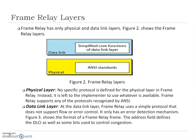In this slide, we discuss Frame Relay layers. Frame Relay has only a physical and data link layer. The first layer is the physical layer. There is no specific protocol defined for the physical layer in Frame Relay; it is left to the implementer to use whatever is available. Frame Relay supports any of the protocols recognized by ANSI, the American National Standards Institute. The second layer is the data link layer. At the data link layer, Frame Relay uses a simple protocol that does not support flow or error control — it only has an error detection mechanism.